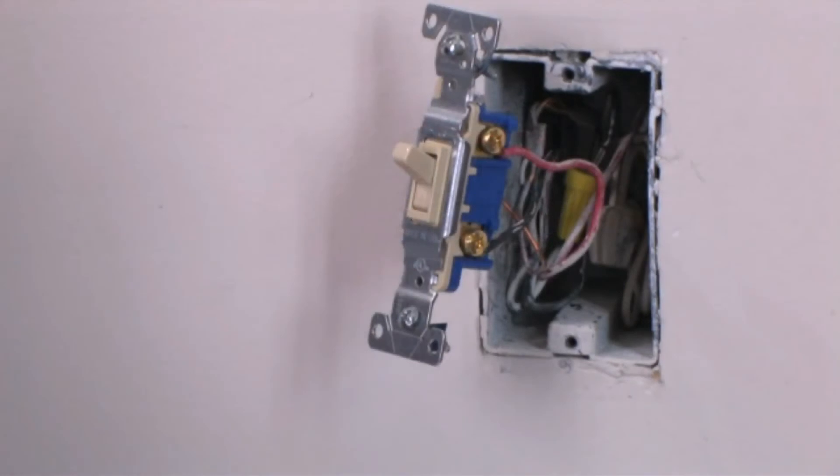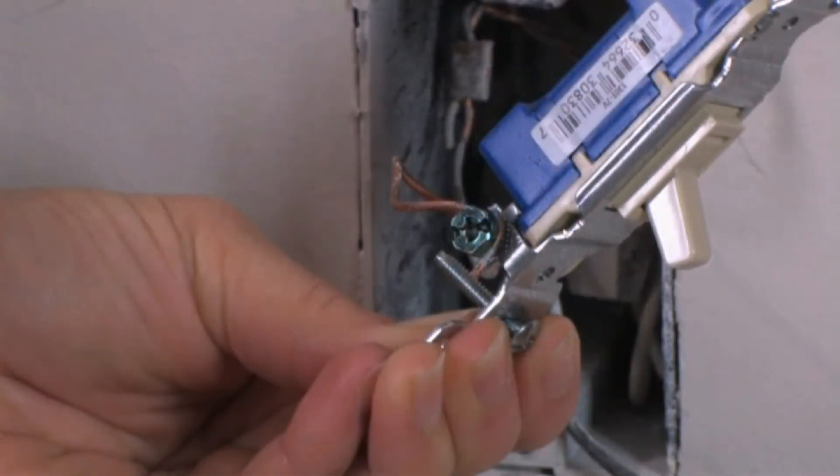You might find a bundle of white wires in the back of the wall box. You won't be using these wires, so you can leave them in place. You'll find a green wire or screw on your switch connected to a green or bare copper wire in your wall box. This is your ground wire.